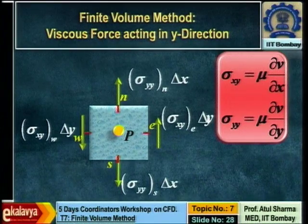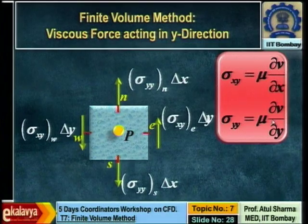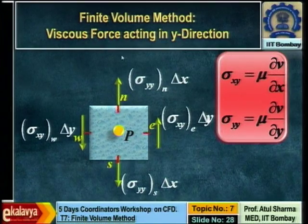A student asks: tau-yx should have another term — μ(∂v/∂x + ∂u/∂y). The instructor clarifies: one term was also omitted from sigma-xx (originally twice this value). In the first lecture it was shown that those two omitted terms, when balanced using the continuity equation for incompressible flow, come out to be zero. The lecture slides will be provided and further questions can be sent by email.